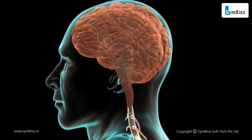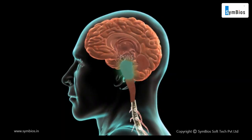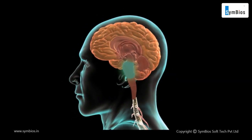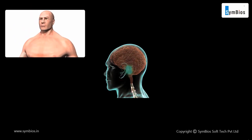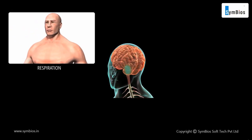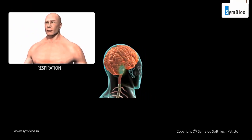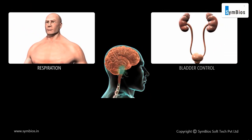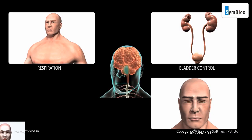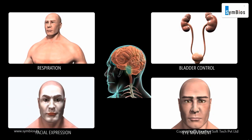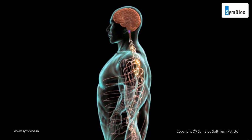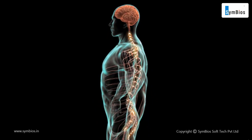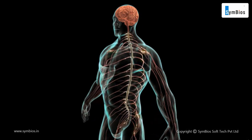The cerebellum helps to provide balanced and coordinated body movement. The pons relay signals from the forebrain to the cerebellum, which deals primarily with respiration, bladder control, eye movement, and facial expressions. The medulla transmits all the signals between the spinal cord and the higher parts of the brain.